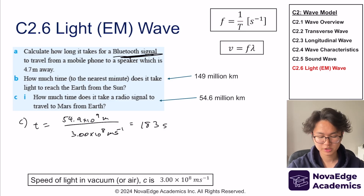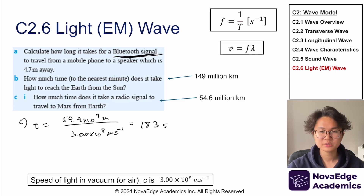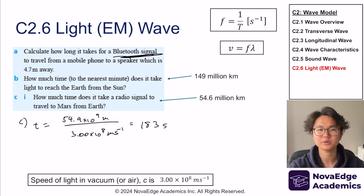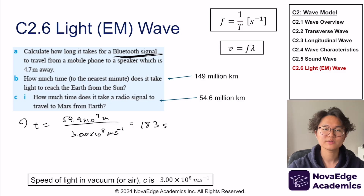That wraps up topic C2. It's literally the shortest topic in IB physics. Next is topic C3, which gets a bit trickier with wave phenomena like diffraction and refraction. If you have any requests — IB topics, TOK, IAs, etc. — leave them in the comments and I'll get back to them when I can. See you in the next video.